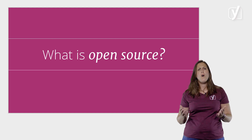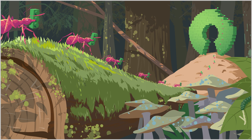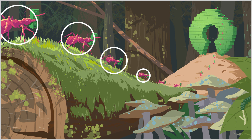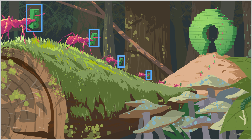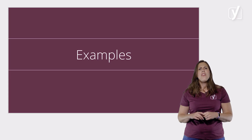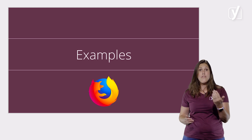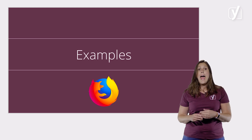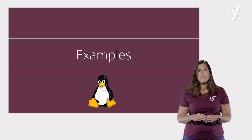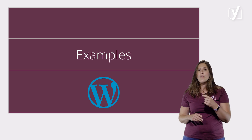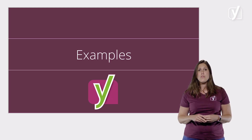So what is open source? Open source software is software that's developed within a community. Everyone can use, alter and distribute the code of the software. People are encouraged to participate in and improve upon the software project. There are a lot of examples of open source software — the Mozilla Firefox internet browser, that's open source. And maybe you've heard about Linux. As we've already discussed, WordPress is an open source CMS. And of course, all of Yoast's plugins are open source too.